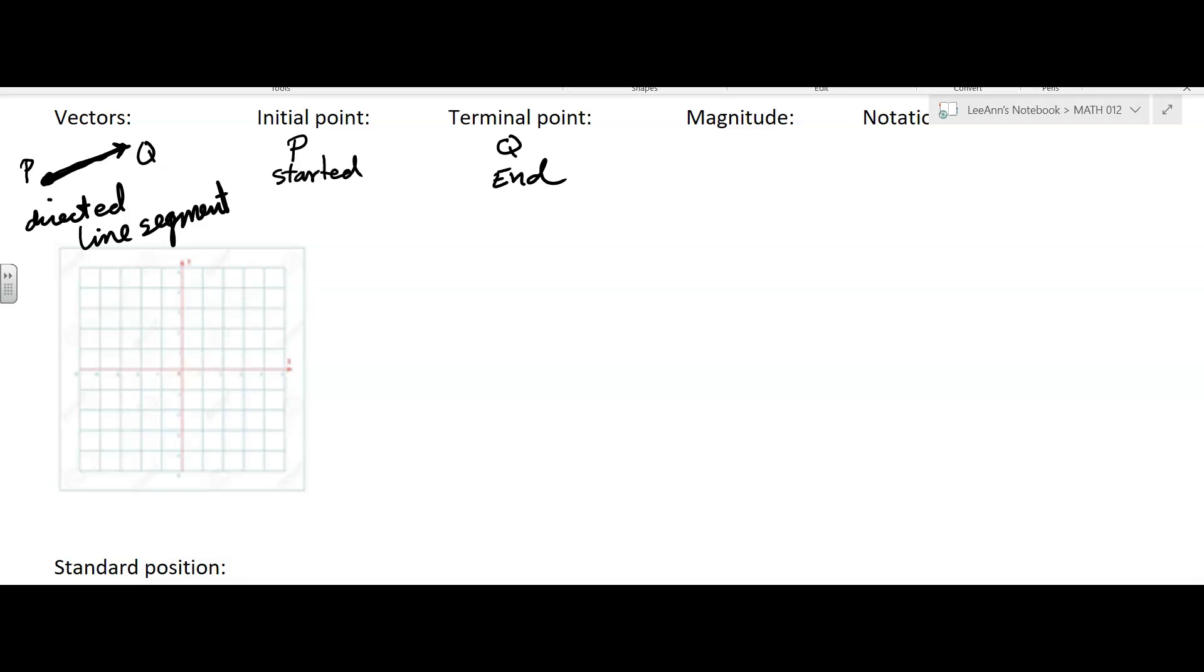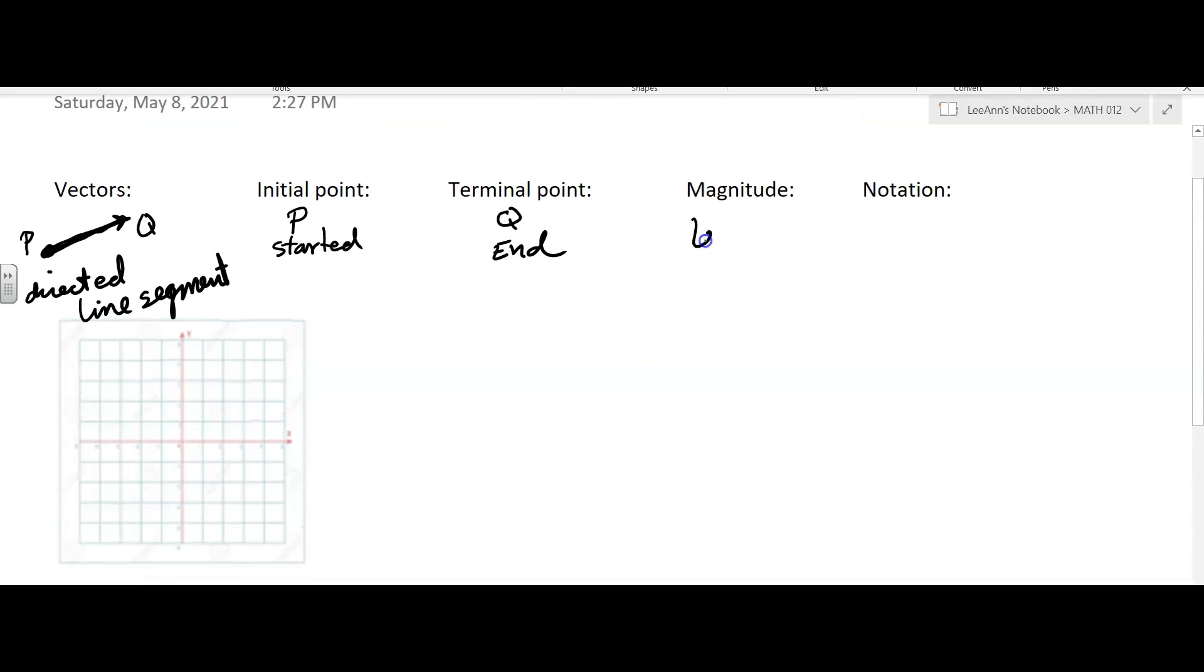The magnitude of a vector is the length of the vector. So I had said 10 miles, right? So in my case, the length would be 10 miles. That would be the magnitude of the vector.